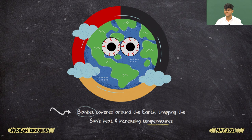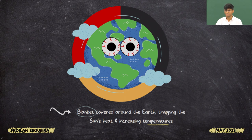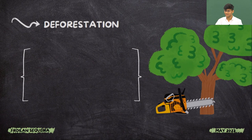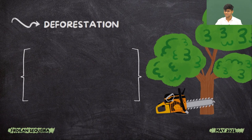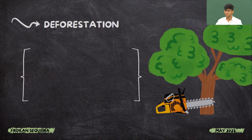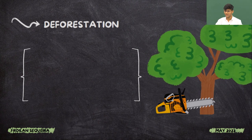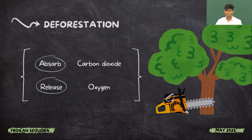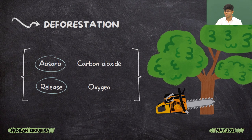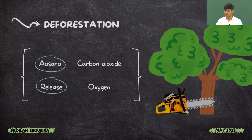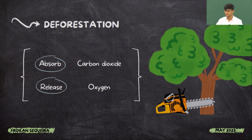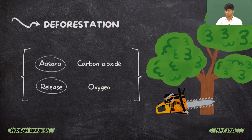Not only that, deforestation is another huge reason for global warming. As we all know, trees absorb huge amounts of carbon dioxide from the air and release oxygen back into the atmosphere.